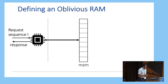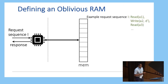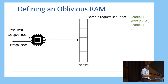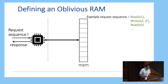Let me start off by quickly defining an oblivious RAM. In general, in a computation, you have a request sequence I, which looks like the following: I want to read memory location A1, followed by write something to memory location A2, and so on. The CPU executes this access pattern and sends a response back. The problem we are trying to solve with an oblivious RAM is to hide which addresses are accessed in this request sequence.